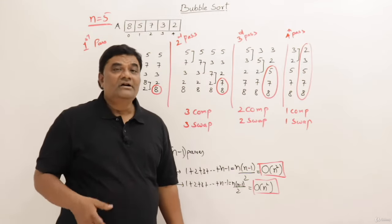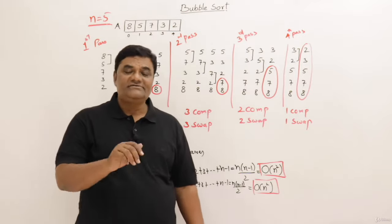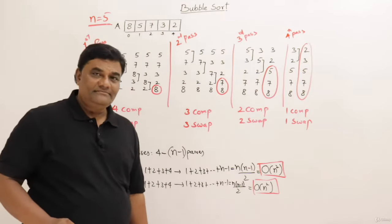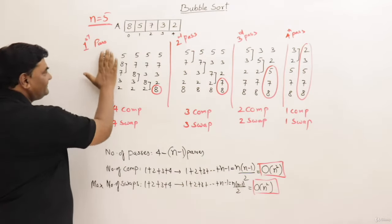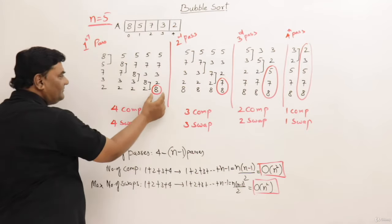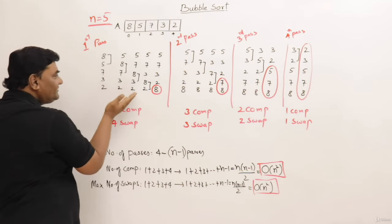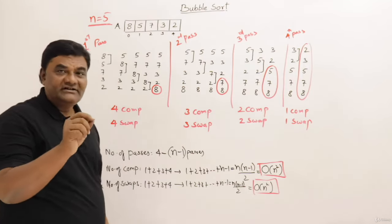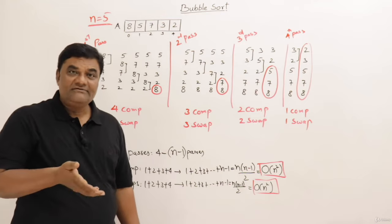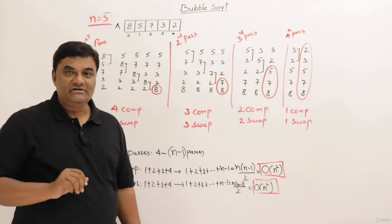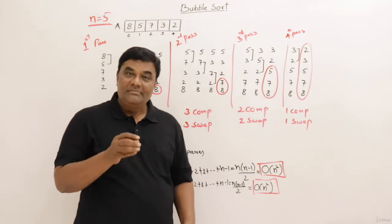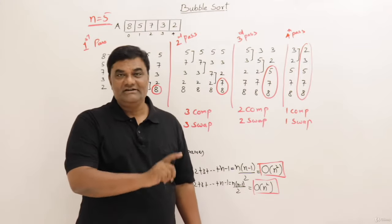We have covered comparisons and swaps. The remaining criteria are: whether it is adaptive, whether it is stable, and whether it uses extra memory. But first, an interesting point — why is it called bubble sort? The heaviest element, eight, sinks to the bottom while the lighter elements like 2, 3, 5, 7 slowly move up. This is just like throwing a stone in water: the heavy stone settles at the bed while lighter bubbles rise up. That is why the name is bubble sort.